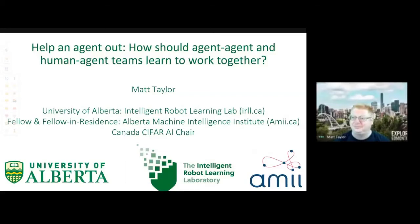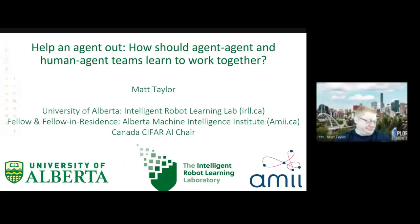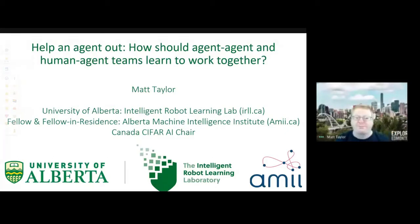Matt has a long history in multi-agent reinforcement learning. He got his PhD at UT Austin working with Peter Stone, then did a postdoc with Milind Tambay at the University of Southern California — two seminal people in multi-agent. He was then a professor at Lafayette College, moved to Washington State University, went into industry at Borealis AI, before coming back and going to Alberta.